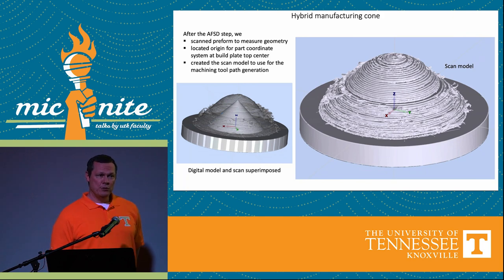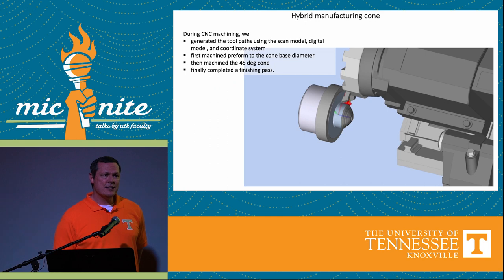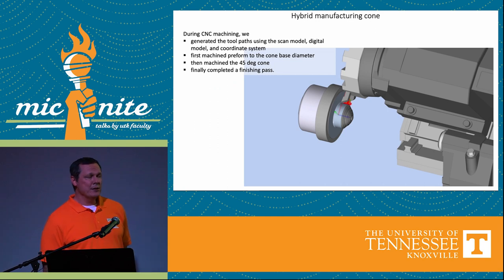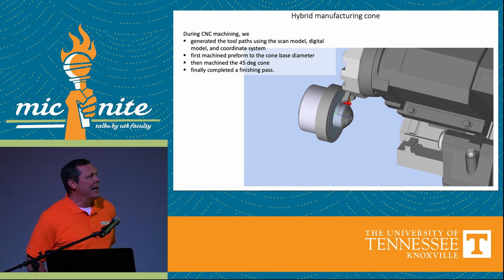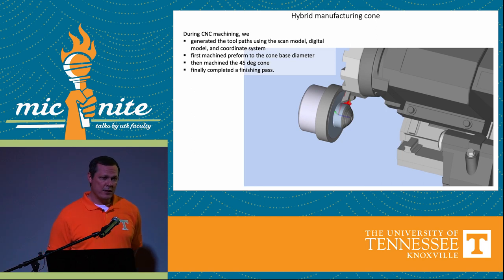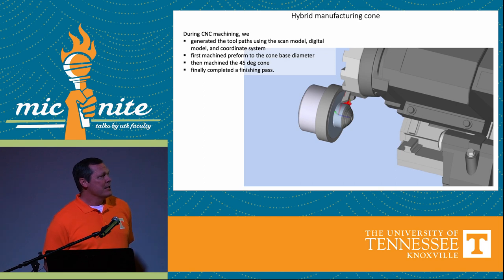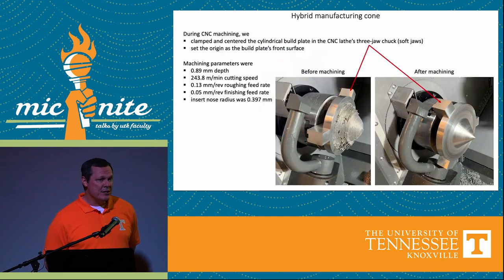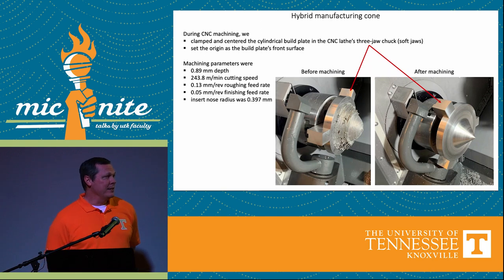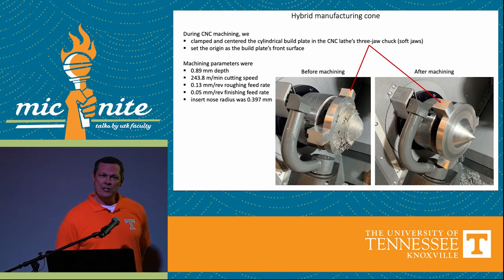Inside the machine tool we can simulate the process — a cutting tool removing material from the part. The first thing we did was remove the extra material from the base, then we started on the cone and removed material from the bottom to the top by this machining operation. Here we see the deposited material mounted in the machine tool on the left, and the final result after machining on the right, where the part was mounted in what we call a three-jaw chuck.